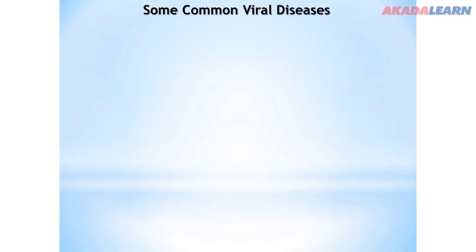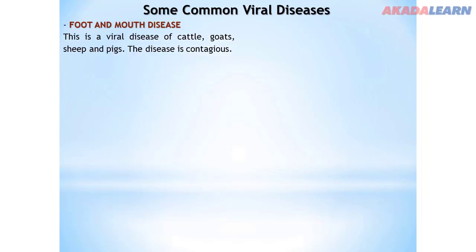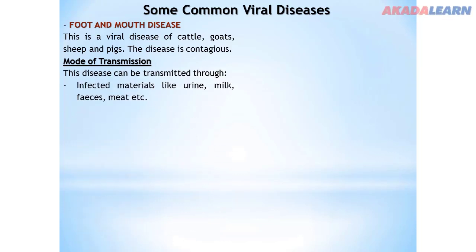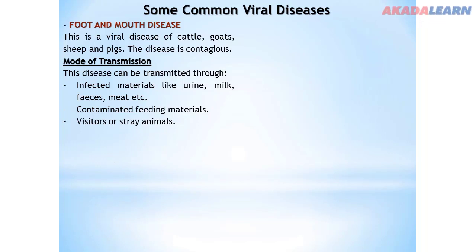Now let's look at common viral diseases of farm animals. The first one is foot and mouth disease. Foot and mouth disease is a viral disease of cattle, sheep, goats, and pigs. It is a contagious disease — it can be transmitted from one animal to another. Modes of transmission include: infected materials such as urine, milk, and faeces; contaminated feeding materials; visitors or stray animals; and contact with infected animals through injury.